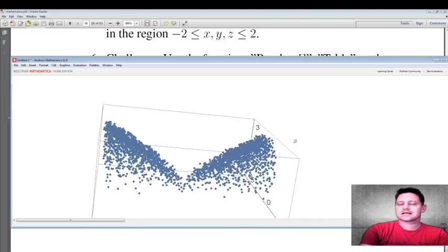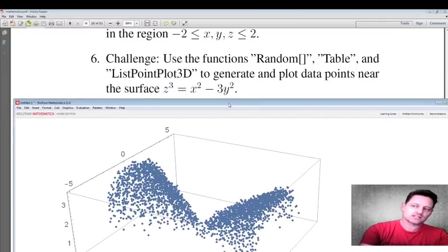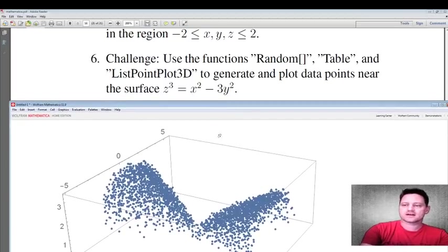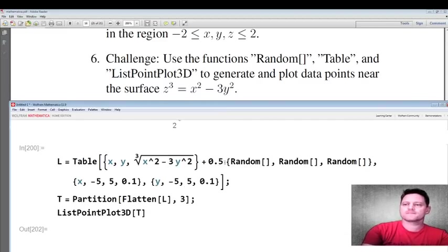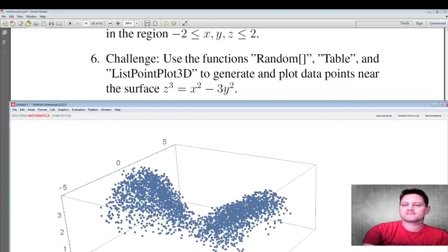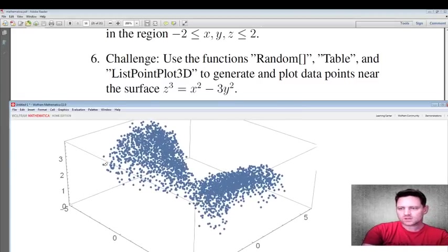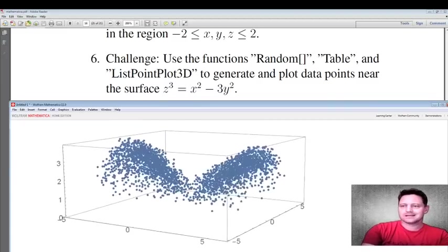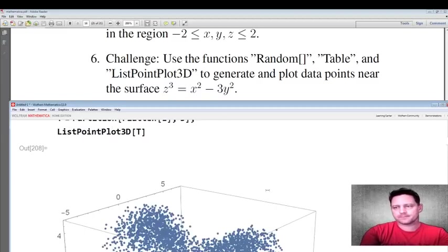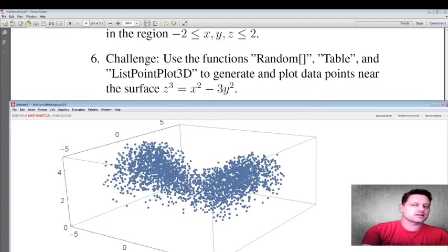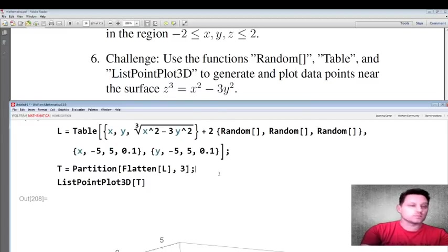So this is a list of points near the surface z³ = x² - 3y², but we've added on some random noise. Now if you want to magnify that, well you can do that. Turn this into a one, for example. Let's see what we have. Okay, and now it's a little bit more random, so you've introduced some entropy if you like into this. We can magnify this even more. Let's put a two there, see what we get. Okay, much more disorder. So they are farther from the surface and so on. So you can magnify that and have a little bit of fun with that.